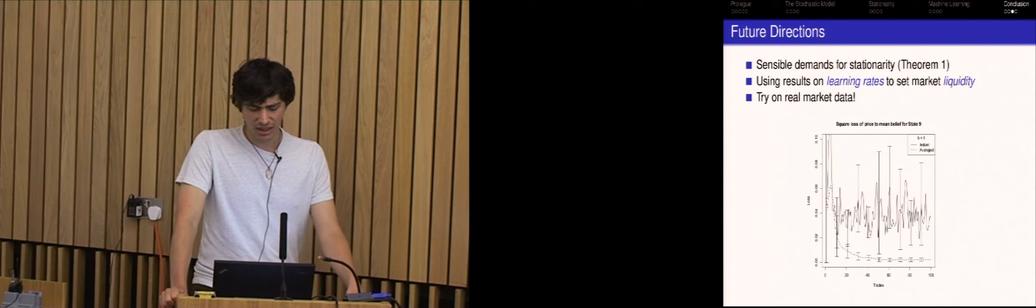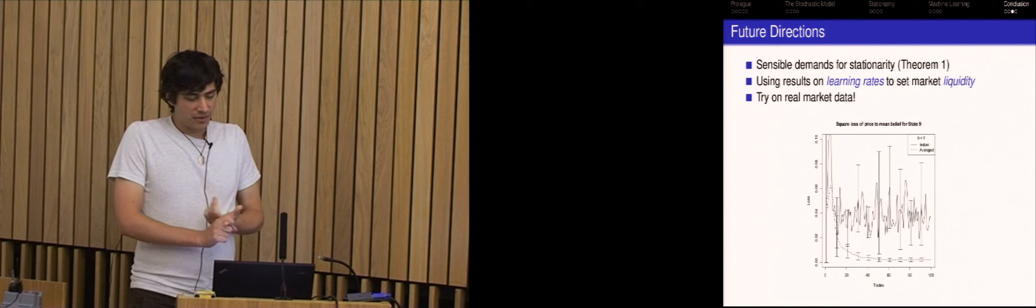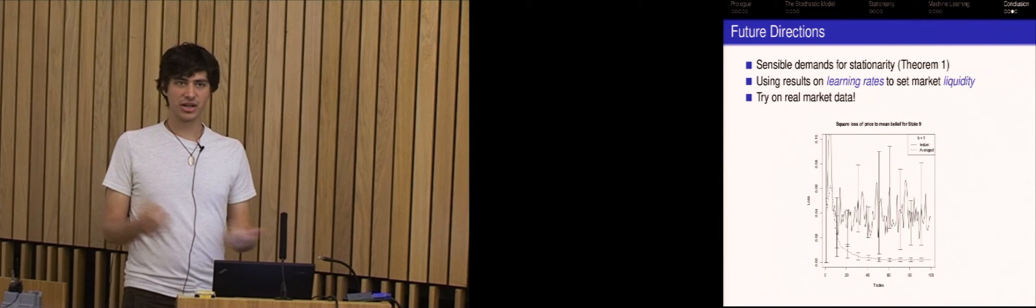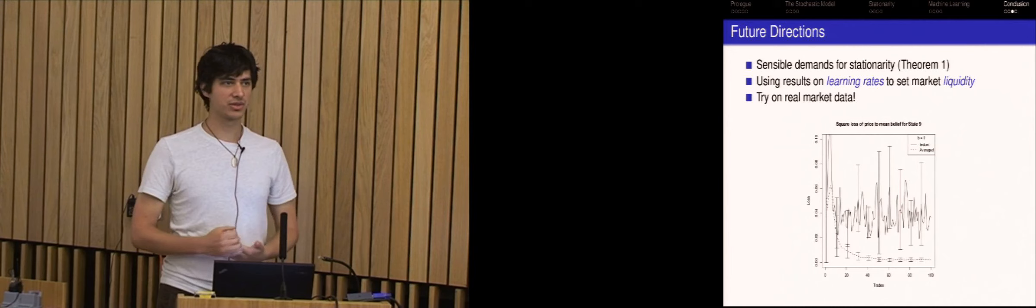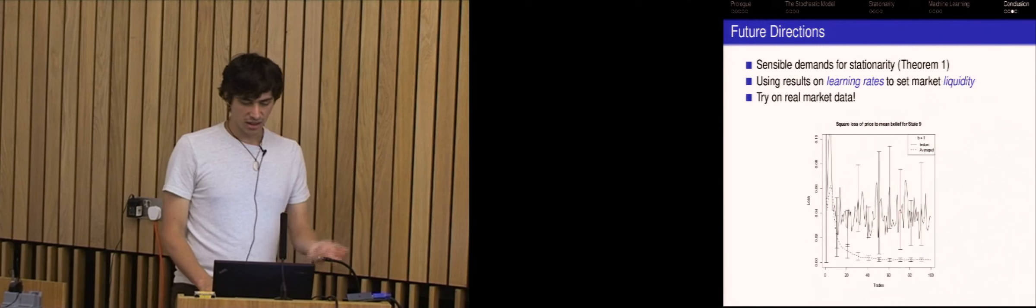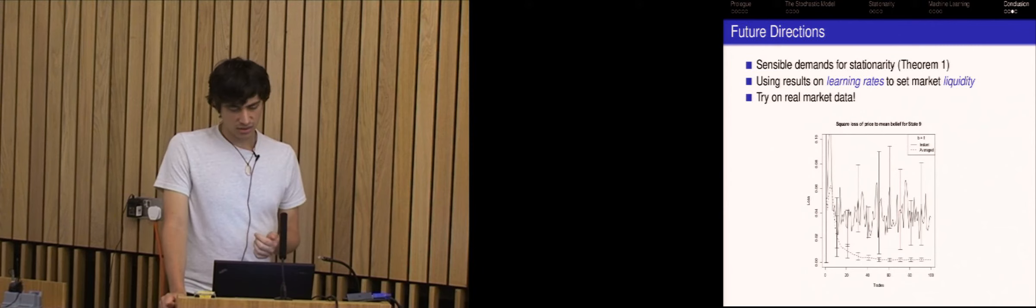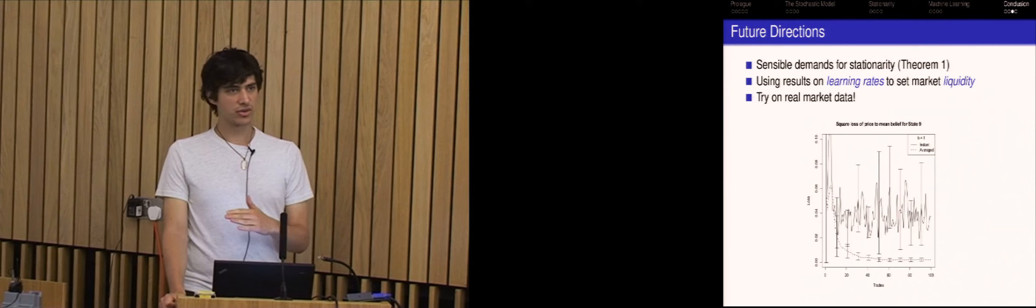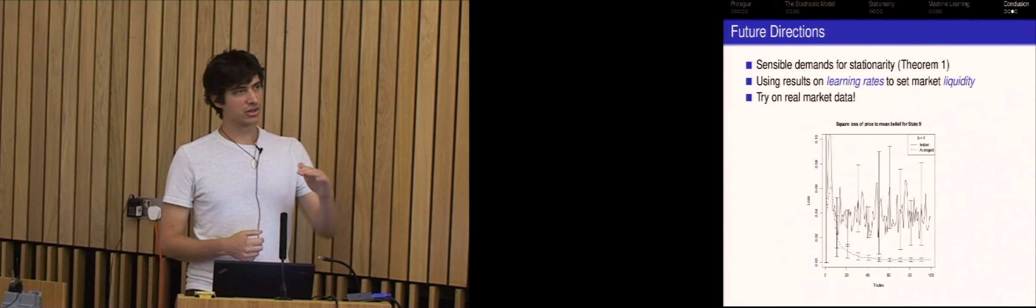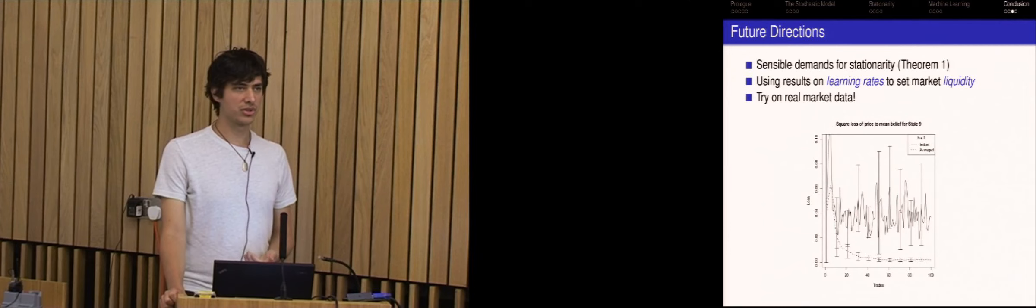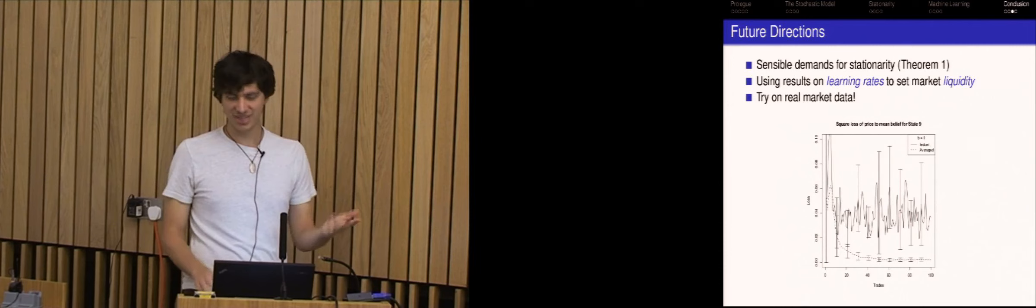So there are standard optimization guarantees for stochastic mirror descent, and you don't have to read all that. The point I want to make is that they're typically done using the average, average point of your iterates, the average iterate. So this sort of suggests that maybe if you're trying to predict something from prediction markets, interpret prediction markets, maybe a sensible thing to do when there's a lot of fluctuation is to look at the average price because there are sort of guarantees about the optimization. And in particular for, I mean this is a completely made up example, but so don't take this with a grain of salt. But if you ever see a market like this, you might want to think about averaging the prices to get a prediction out of it.